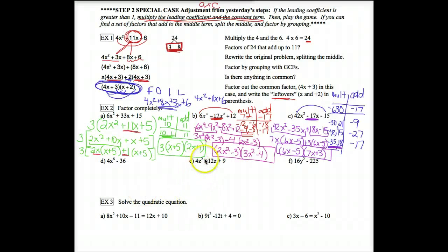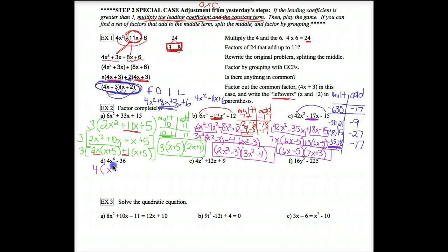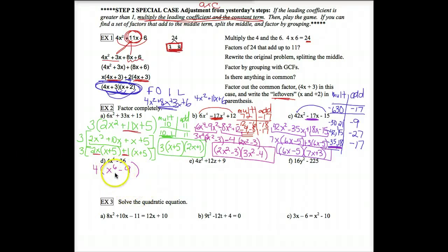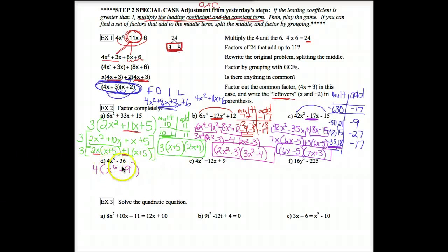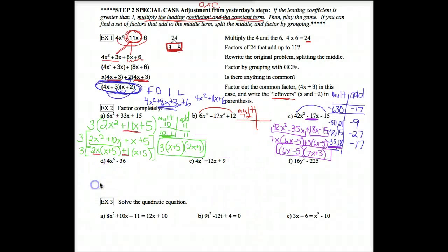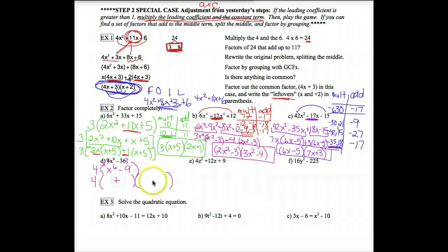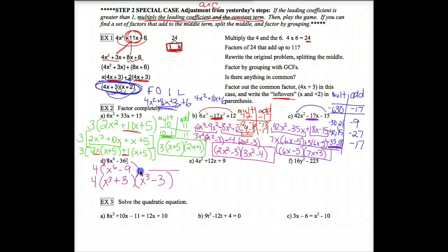Looking at example 2D, always check for a GCF first — both terms are divisible by 4, so take 4 out in front, leaving x to the sixth minus 9. That's a binomial, and the only way binomials factor is with GCF, which I already did, or with difference of squares. Does x to the sixth have a perfect square root? Yes — x cubed, because x cubed times x cubed is x to the sixth. Does 9 have a perfect square root? That's 3. So this is a difference of squares: fill in two parentheses, one with plus and one with minus, with x cubed in the fronts and 3 in the backs.